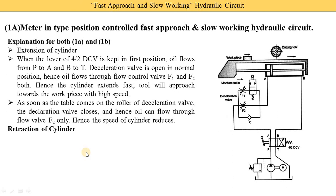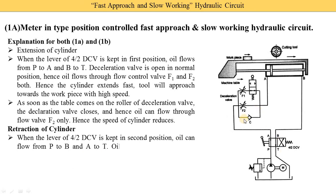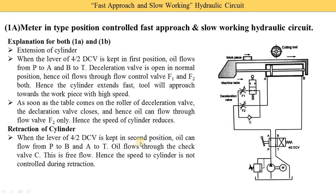That completes the extension stroke. For the retraction stroke, the operator changes the position of the directional control valve. When the lever of the 4/2 DCV is kept on the second position, oil flows from P to B and A to T. Oil from the pump is supplied to the B-port and then to the cylinder, moving the piston from right to left. Oil on the left side of the piston comes to the A-port, where it has three options: F1, F2, or check valve C. Since F1 and F2 are closed during retraction, oil passes through check valve C to the A-port, and from A to T to the reservoir. This is called free flow; hence, cylinder speed is not controlled during the retraction stroke.